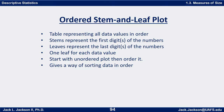Now let's talk about an ordered stem and leaf plot. A stem and leaf plot is a table representing all the data values in order. The stems represent the first digit or digits of the number and the leaves represent the last digit of the number, so there's basically one leaf for each data value. You can start with an unordered stem and leaf plot and then put it in order — it gives us a way of sorting the data.